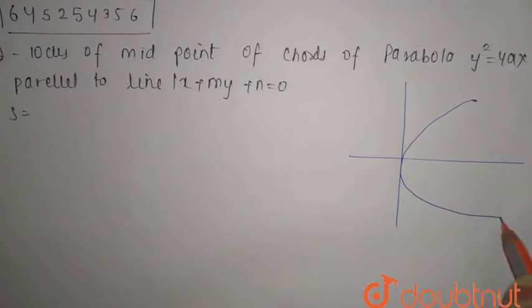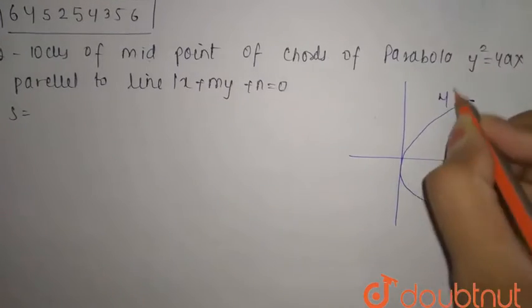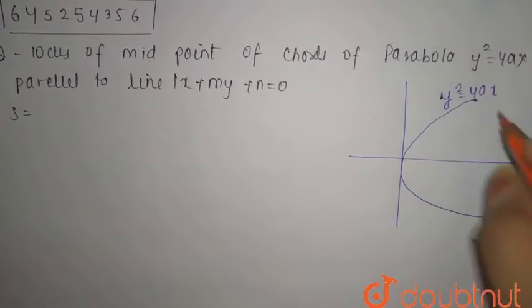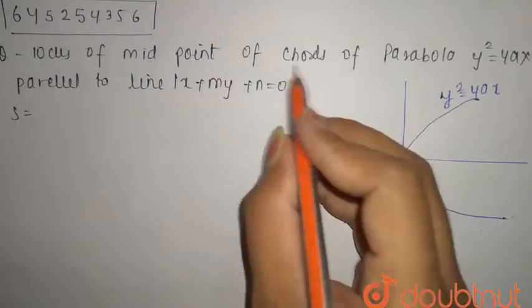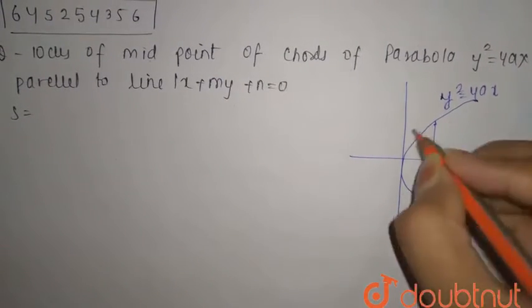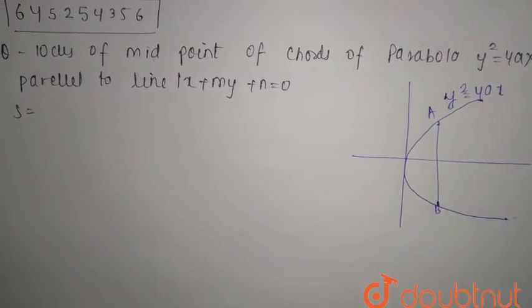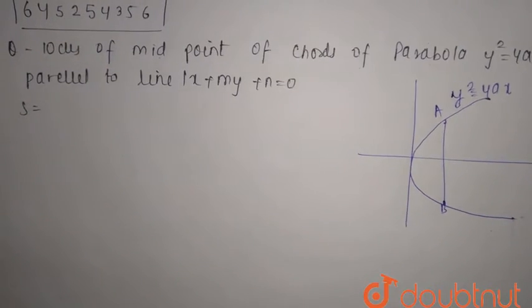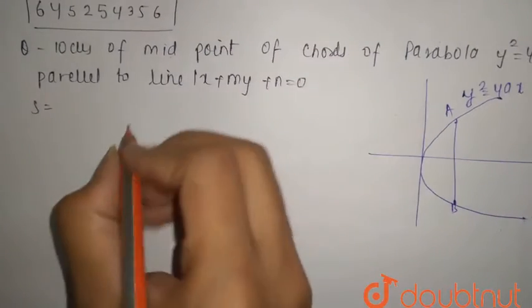This is your parabola and we have chords of a parabola. So let this be a chord of a parabola, which is A and B. You can say that this is the chord of a parabola. So first of all, let the midpoint, because in the question we have talked about midpoints of chords.